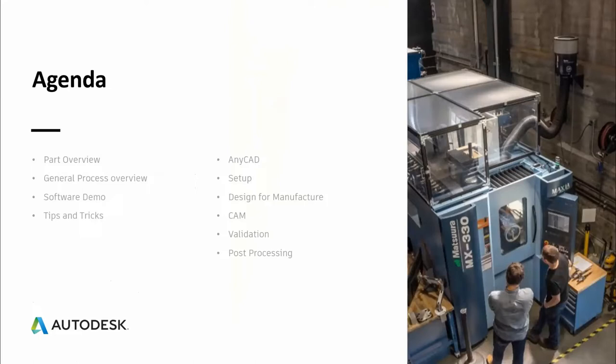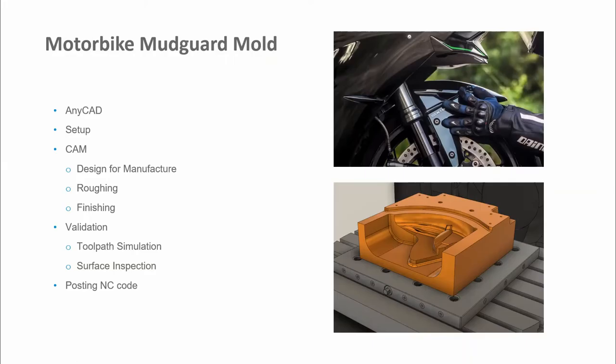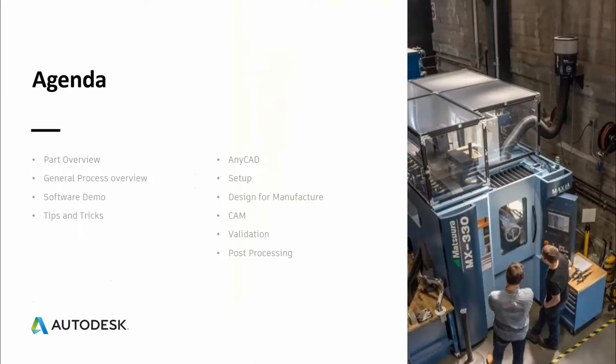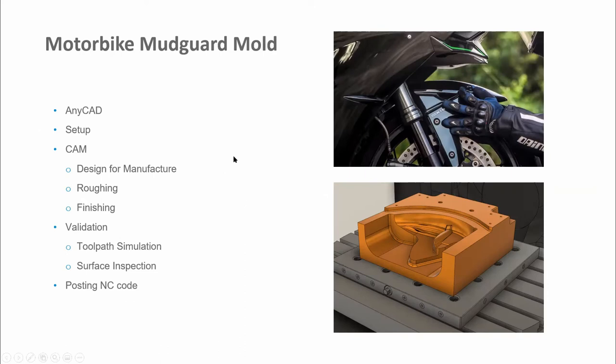Let's start with an agenda of what I'm hoping to cover today. We'll start by looking at the general process overview. Our part that we're going to be using today is this motorbike mudguard mold — a relatively complex component with deep cavities, complex geometry, a couple of 2D and 3D features, and some hole drilling. The aim is to take you through a full workflow from part to post, on tips and tricks and high-level suggestions on how to get the most out of Fusion 360 and the manufacturing workspace.